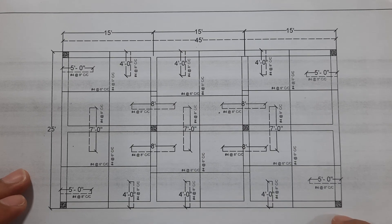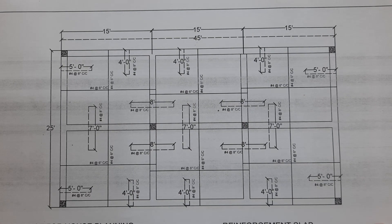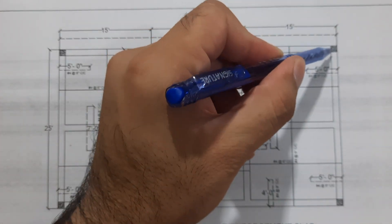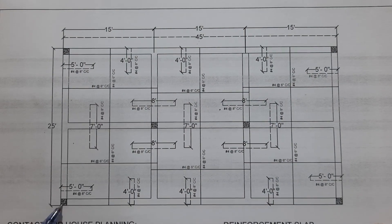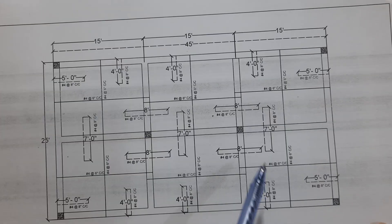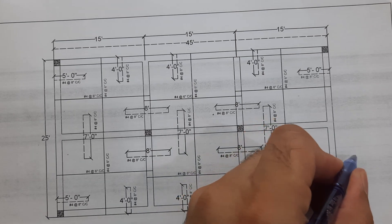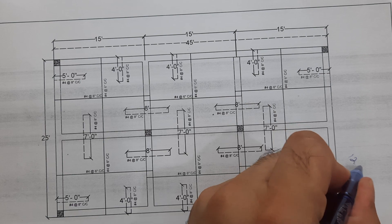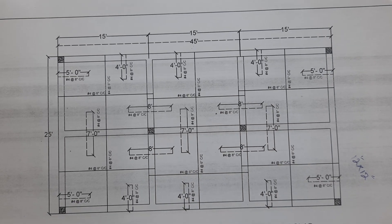As you can see, we have four columns at the corner — one, two, three, four — and two at the center, so totally here we have six numbers of RCC columns. The size of the column is 12 by 12 inches.